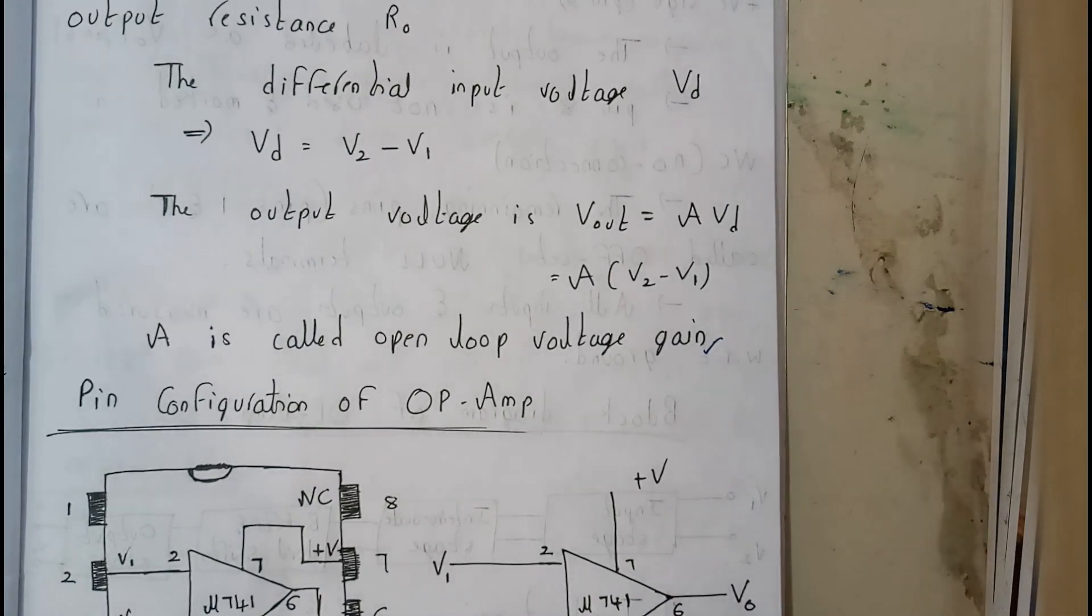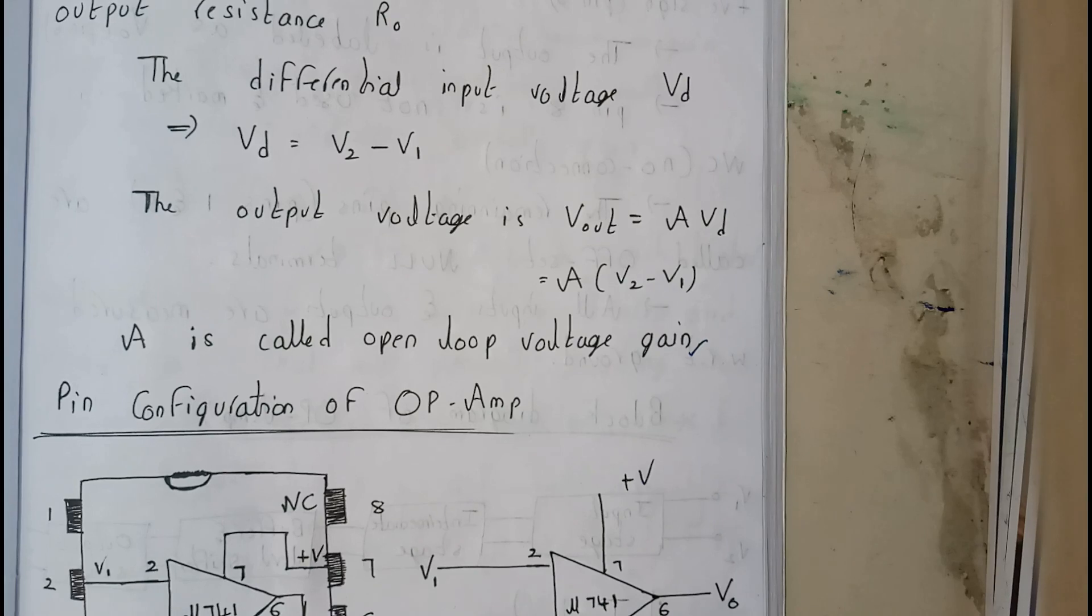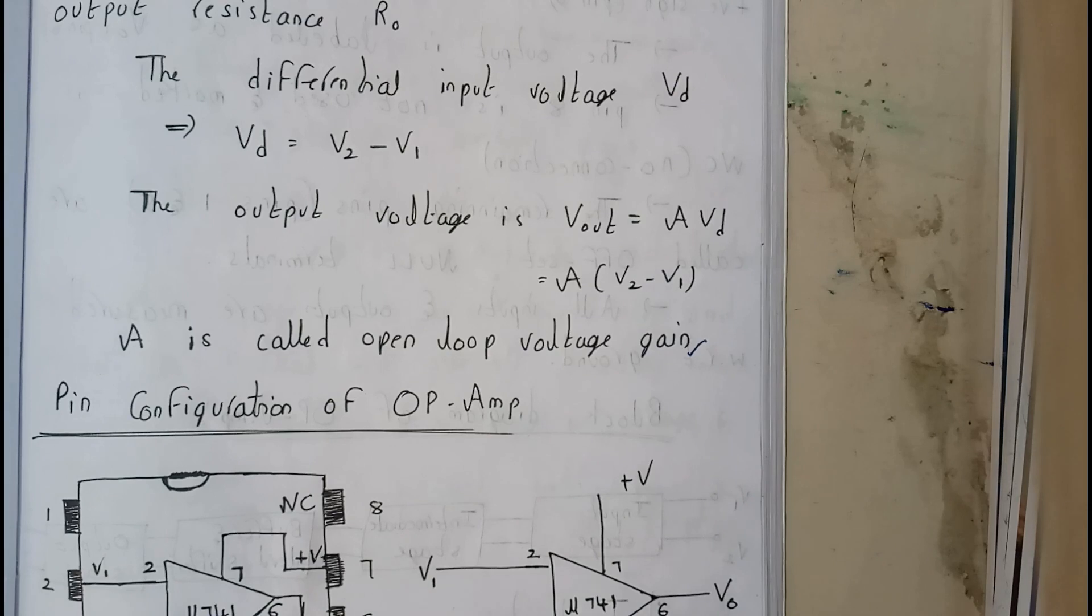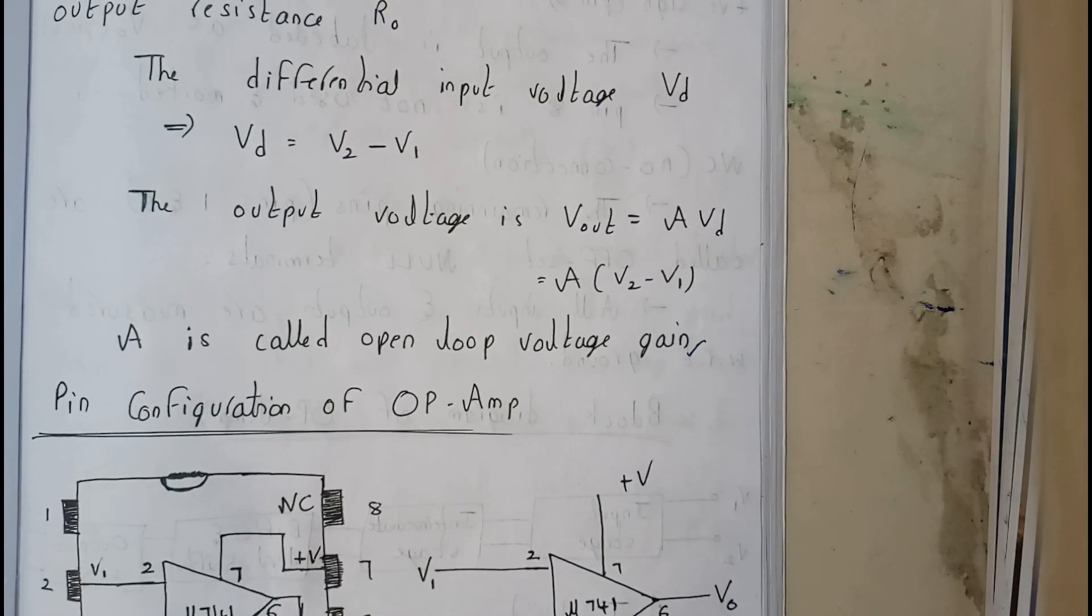So now let us go through the pin configuration of operational amplifier. This is an important thing. This may be for two marks or if we are lucky, he'll be asking all about operational amplifiers, diagram with equivalent diagram and draw the pin configuration. That's the most important thing. Basically let's go through it.